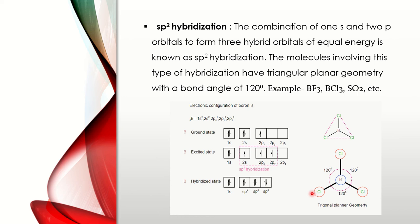Taking BCL3 as an example: Boron's ground state configuration is 1S2, 2S2, 2P1, so the valency shell configuration is 2S2, 2P1. To combine with 3 chlorines, we need 3 singly filled orbitals, so one electron from S is promoted to P. This gives 3 singly filled orbitals which combine with the three chlorines to form SP2 hybridization, giving triangular planar geometry with a bond angle of 120 degrees.